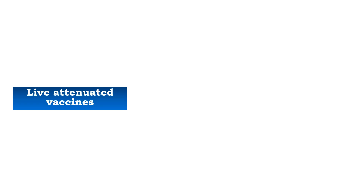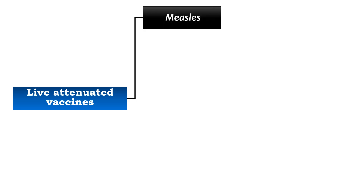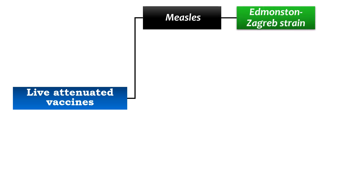Moving to live attenuated vaccines, starting with measles: the strain used is the Edmonston-Zagreb strain, prepared from chick embryo cell lines. It is available in lyophilized form and must be reconstituted with distilled water and used within four hours of reconstitution. Importantly, the measles vaccine and immunoglobulin should never be given together — a gap of 8 to 12 weeks must be maintained between the two.